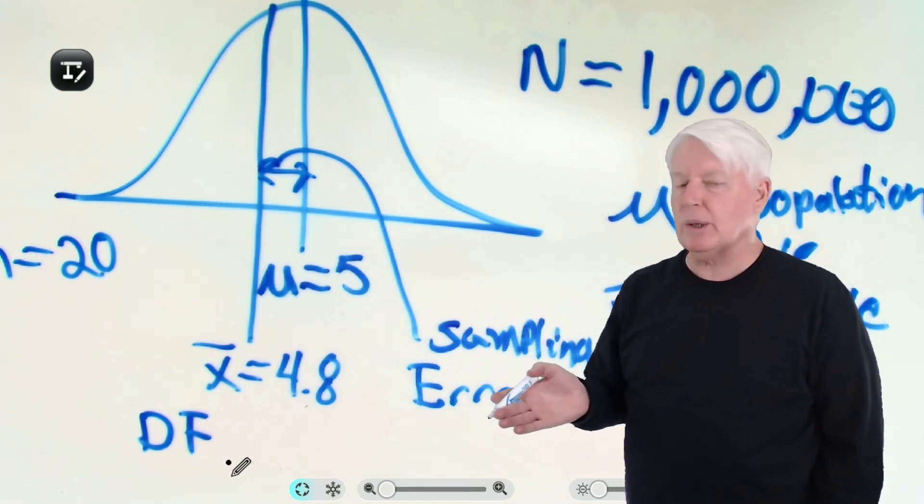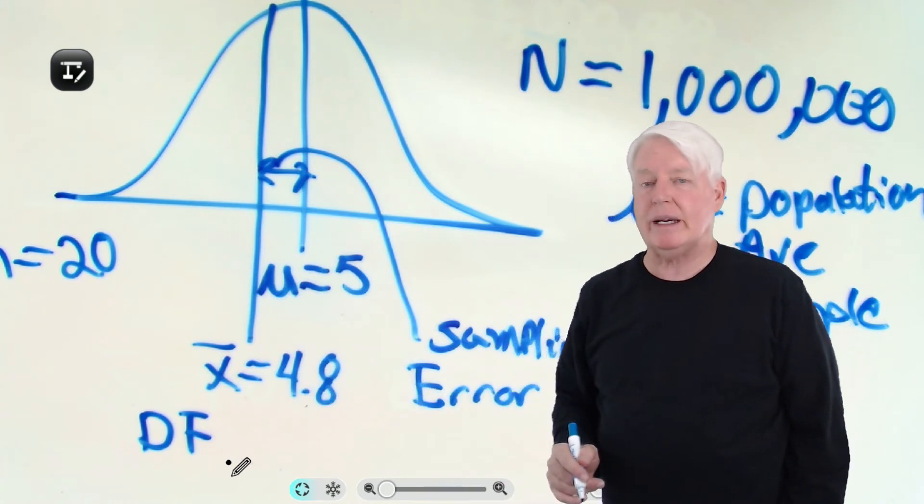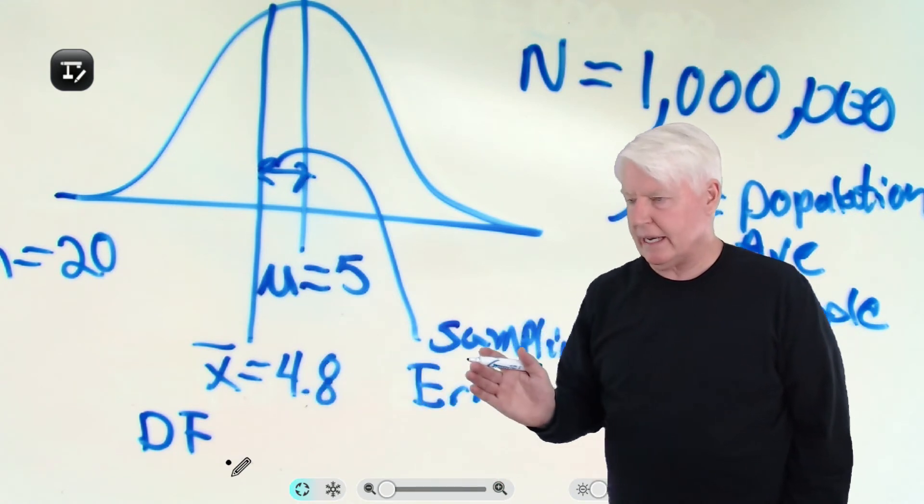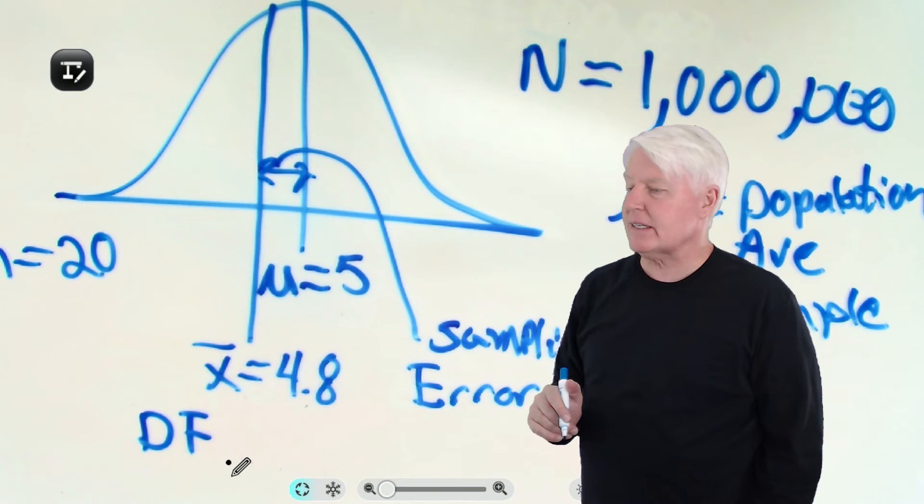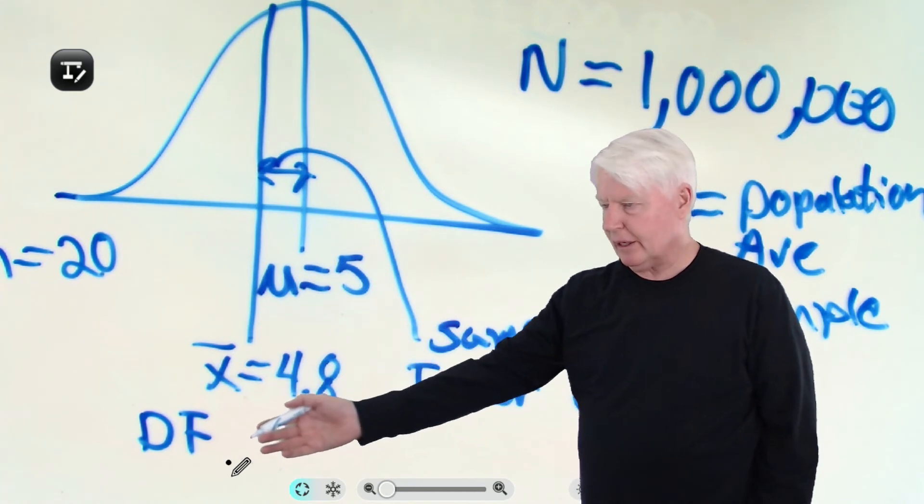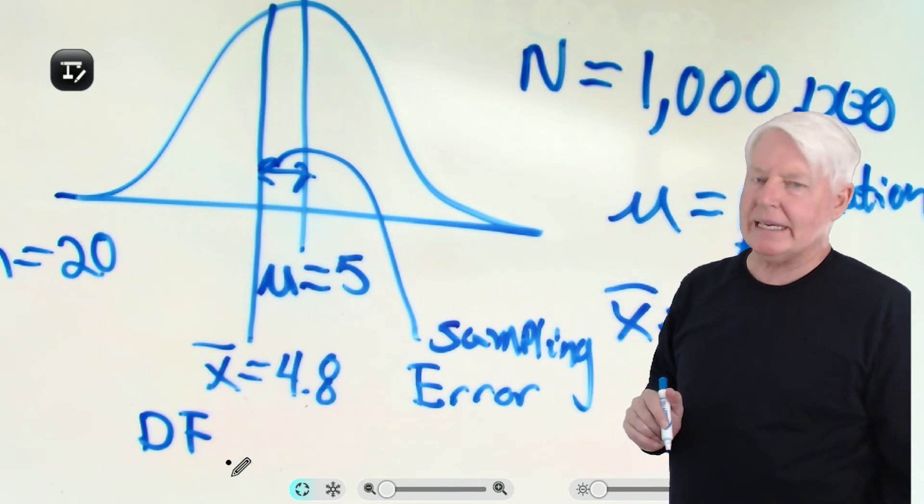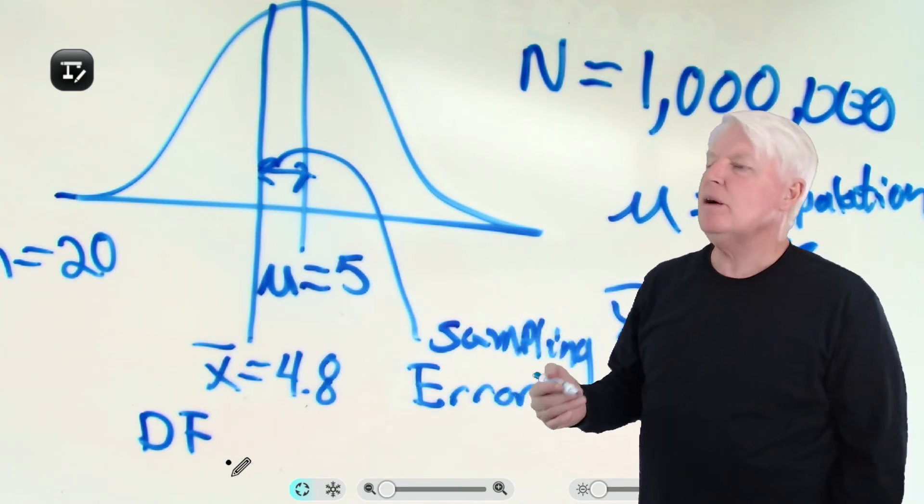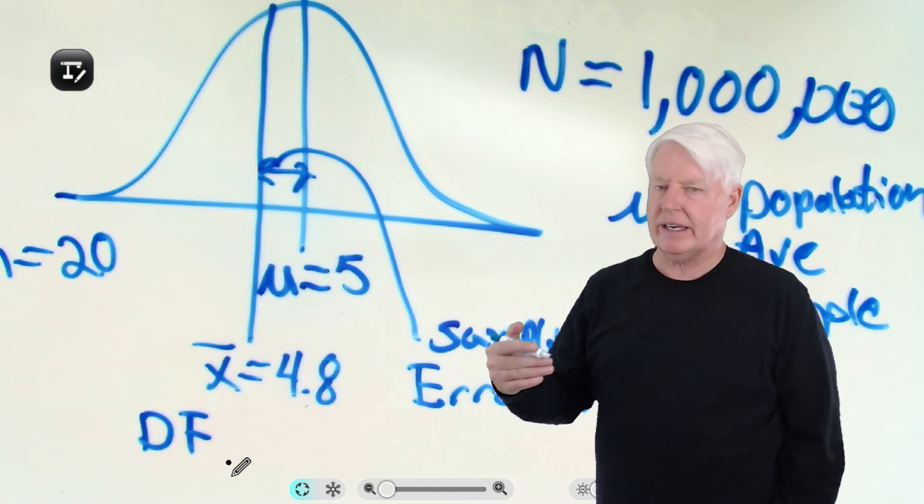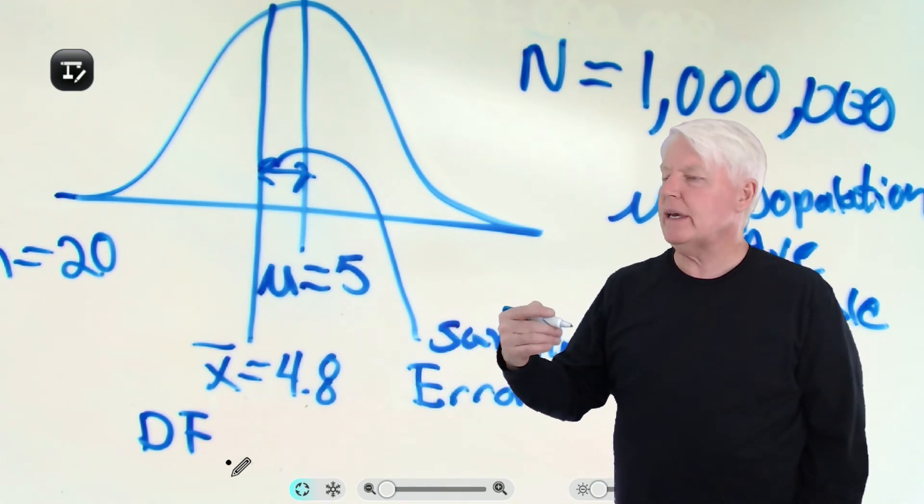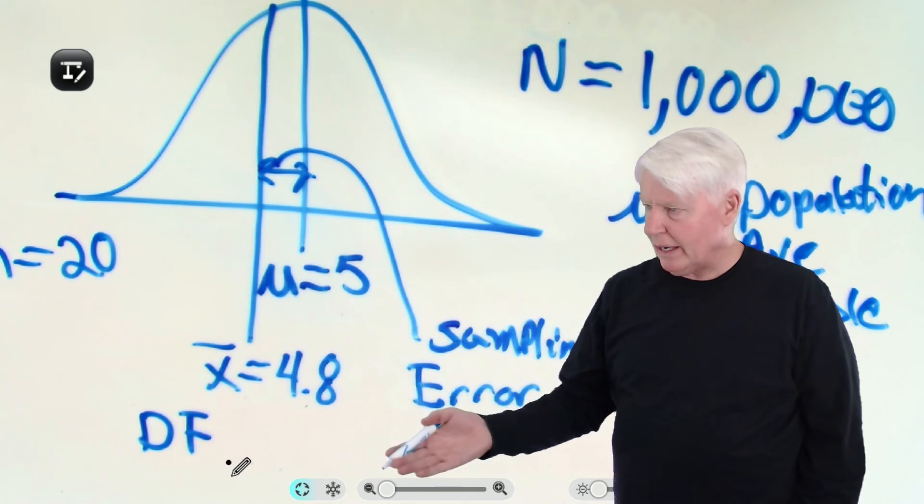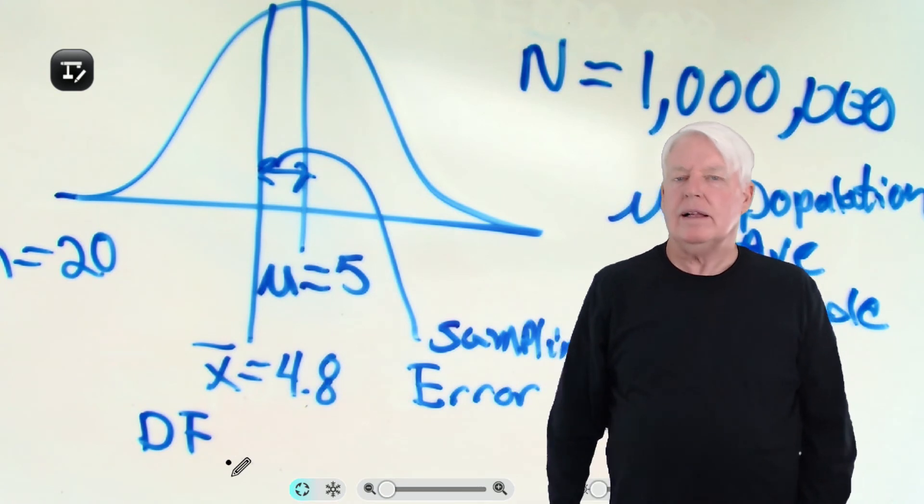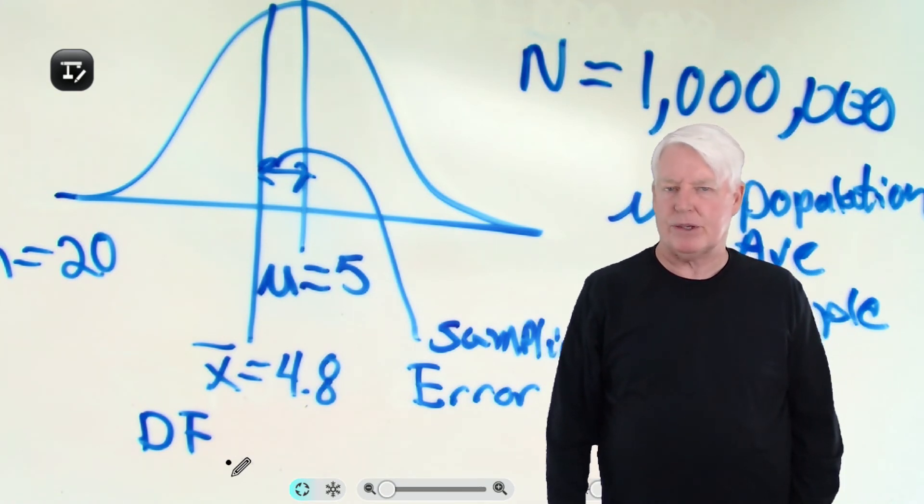And we take into account sampling error in our calculations by something we call degrees of freedom. If a table has degrees of freedom in the table, you know it takes into account sampling error. If a given statistical table, such as the z-statistic, does not have degrees of freedom in the table, you know it does not take into account sampling error. When can you ignore sampling error? When does it get so small? Well, oftentimes for hypothesis tests anyway, 30 is the number. So if you get a sample size of 30 or greater, oftentimes you can ignore sampling error. So anyway, hopefully that was helpful on helping you understand the concept of sampling error.